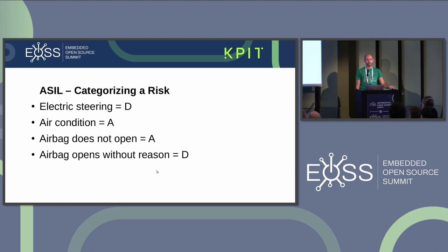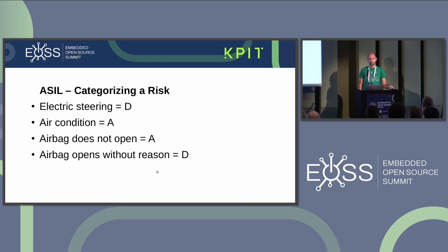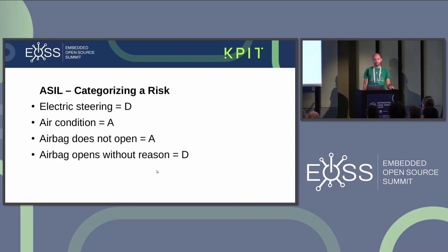We will not talk about specific ASIL levels later in this talk, but it is important to understand that if you want to reduce a risk, you have three options: reduce the severity, reduce the exposure, or increase the controllability. The severity and exposure usually cannot be changed, but in many cases it is possible to change the controllability, and that will become important in graphics-related use cases.